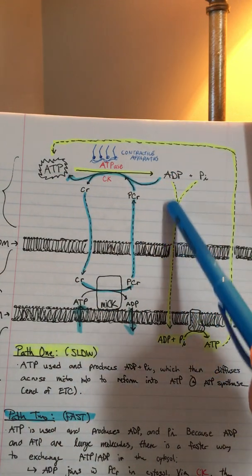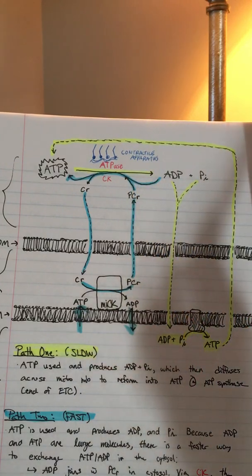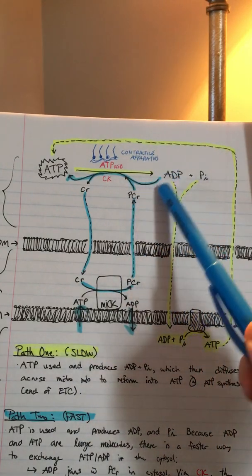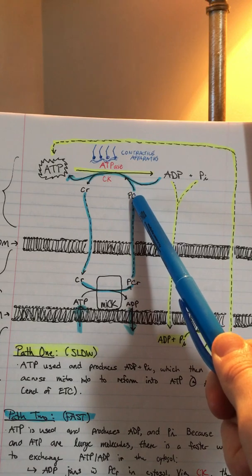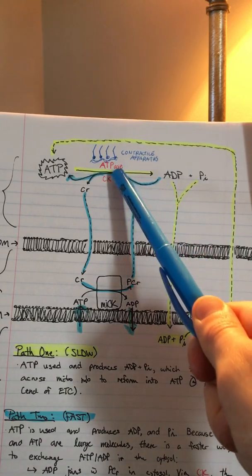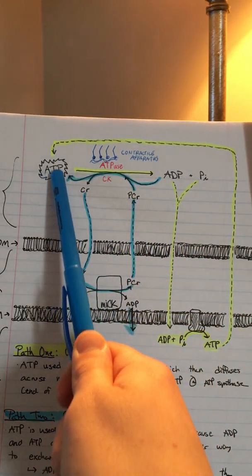Rather than diffusing all the way into the mitochondria, it just interacts with phosphocreatine that's hanging out near it in the cytosol. It picks up a phosphate from the phosphocreatine in the cytosol and gets returned into ATP, so it can produce contraction again.